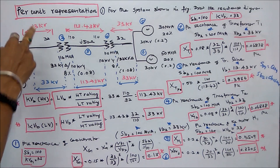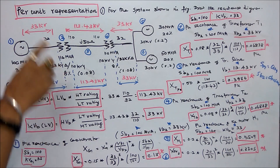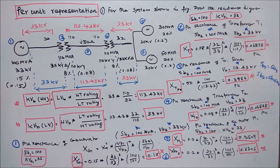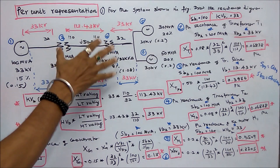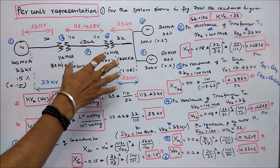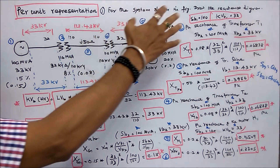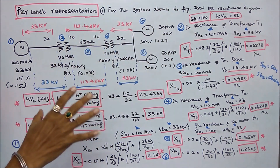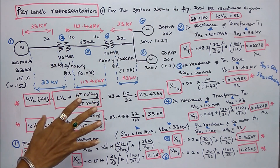This class we worked out three problems in per unit representation. Problem 1: For the system shown in figure, draw the reactance diagram.